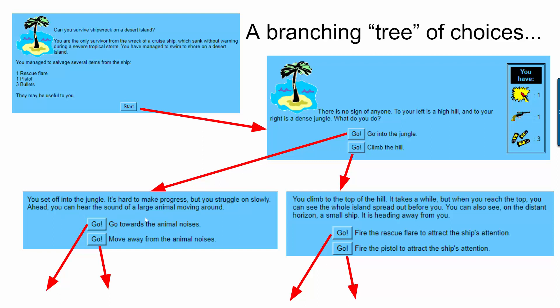So if you go to the jungle now you have another set of choices. You can go towards animal noises or away but instead if you choose to climb the hill now you've got a set of choices in that direction as well. You could fire a rescue flare or fire a pistol to attract the ship's attention.